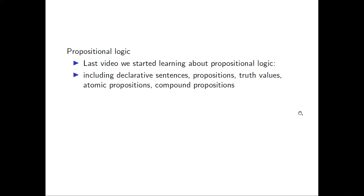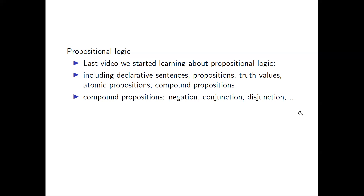We also went over atomic propositions and compound propositions. Atomic propositions are propositions that do not contain any smaller propositions — like atoms. Compound propositions on the other hand are built from simpler propositions. We can use conjunctions, disjunctions, and negations to build more complicated propositions. In today's video we're going to look at multiple other ways to build compound propositions and their truth tables.